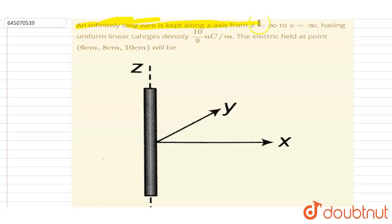...along the z-axis, z is varying from minus infinity to plus infinity, having uniform charge density 10 by 9 nanocoulomb per meter.